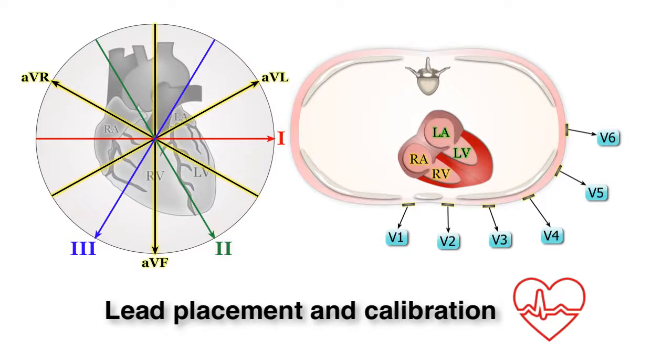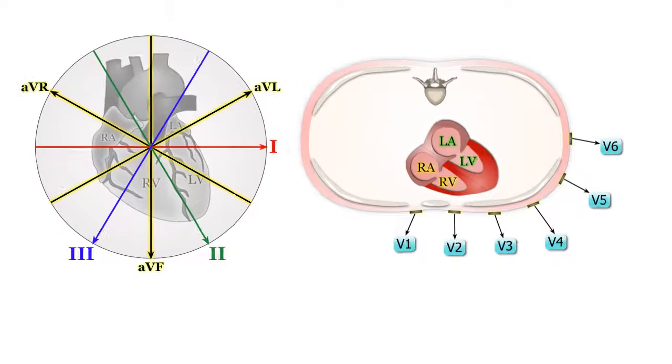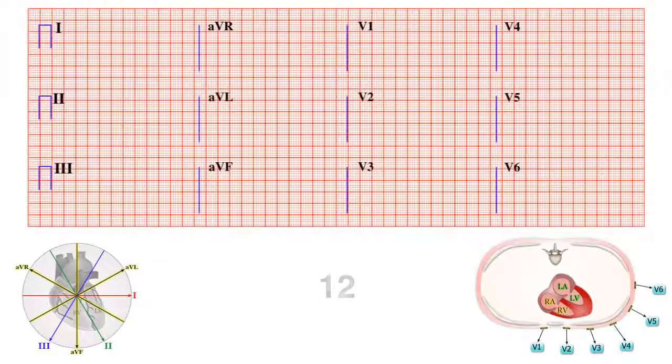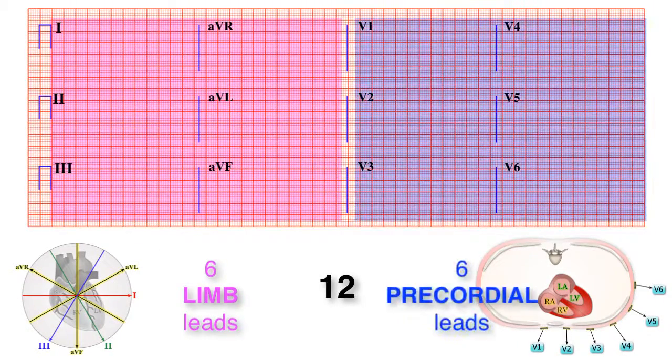Now let's start by all the leads, their placement on the body, and on the EKG. Standard EKGs consist of 12 leads: 6 limb leads and 6 precordial leads.